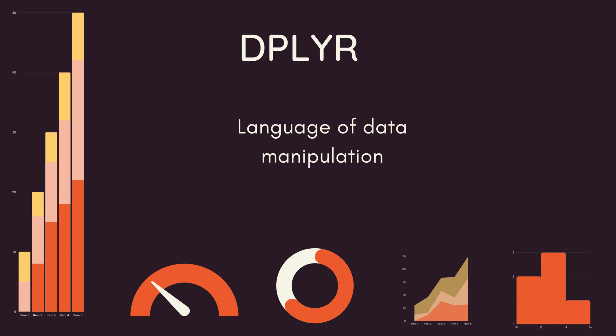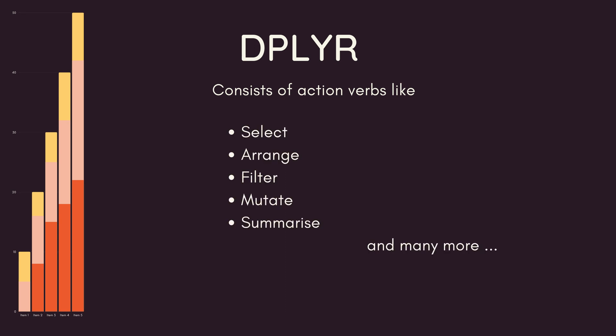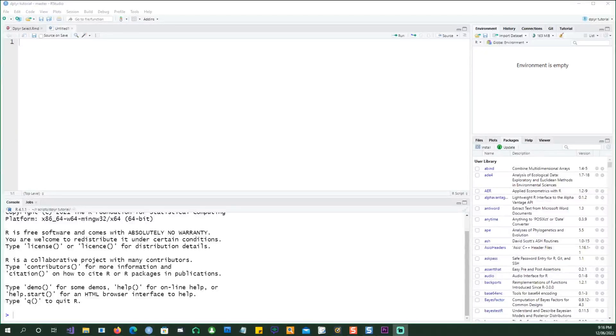Welcome to this video on dplyr. dplyr is a language of data manipulation which consists of various verbs like select, arrange, filter, mutate, summarize, and many more, which can be used to make simple or complicated data manipulation commands. In this video we'll be focusing on the select command.